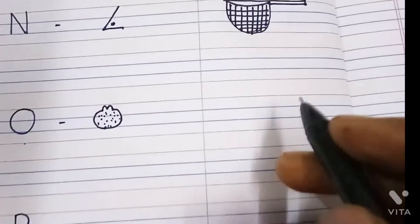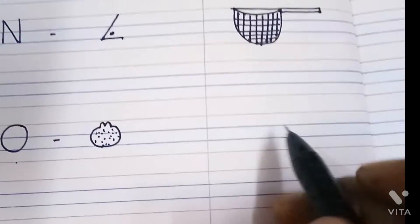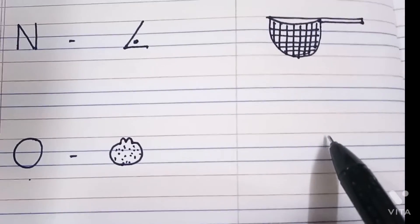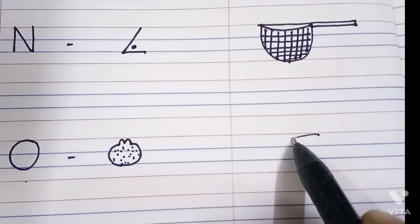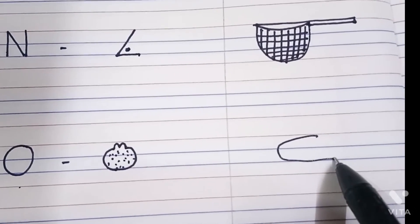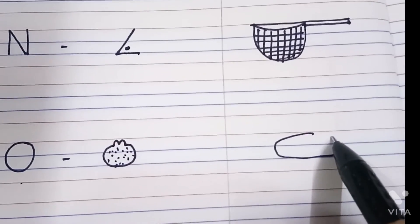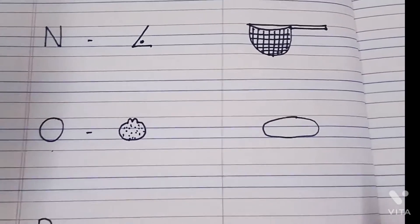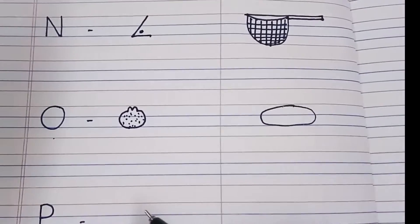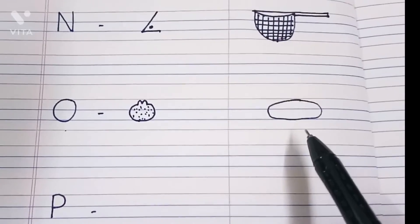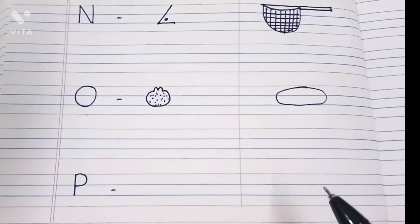Now we are going to draw one more object for letter O. Let's draw. Draw one small standing line, then just draw one oval shape. That's it. O says O — orange and O — oval.